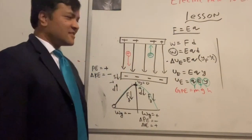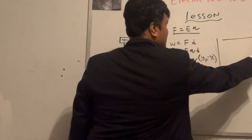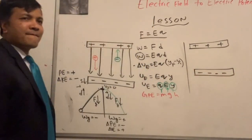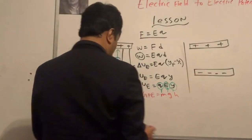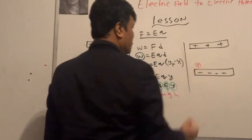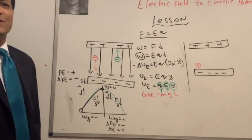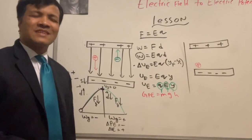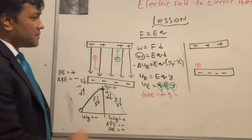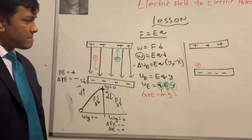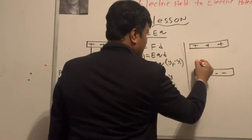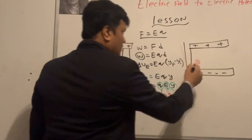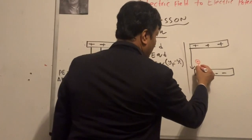Now let's connect this to our electric plates. I have a positive plate and a negative plate. I'll place a positive charge between them — like a football. The electric field points downward, so the electric force on the positive charge also points downward.